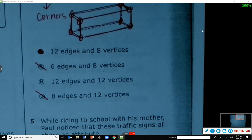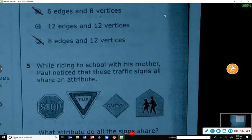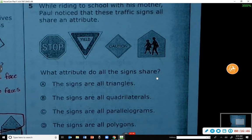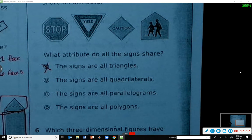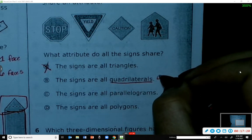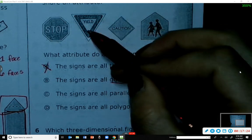Number five: While riding to school with his mother, Paul noticed that these traffic signs all share an attribute. What attribute do all the signs share? I want you to take a moment to try to figure that out first. Did we figure it out? Okay, let's see. What attribute do they all share? Are they all triangles? No. Are they all quadrilaterals? No, because that means they would all have to have four sides, and we know the triangle doesn't.